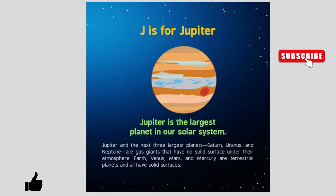J is for Jupiter. Jupiter is the largest planet in our solar system. Jupiter and the next three largest planets — Saturn, Uranus, and Neptune — are gas giants that have no solid surface under their atmosphere. Earth, Venus, Mars, and Mercury are terrestrial planets and have solid surfaces.